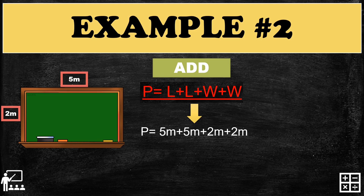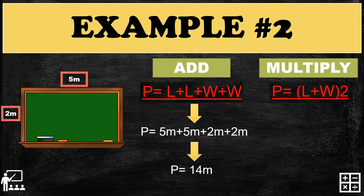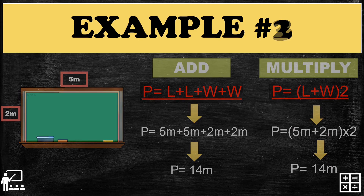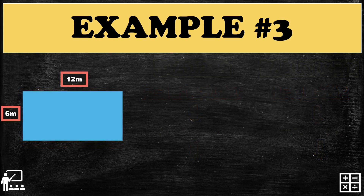Adding 5 + 5 + 2 + 2 gives you 14 meters. For the multiply method, substitute the length and width: 5 meters + 2 meters = 7 meters, then multiply by 2, which also gives you 14 meters.